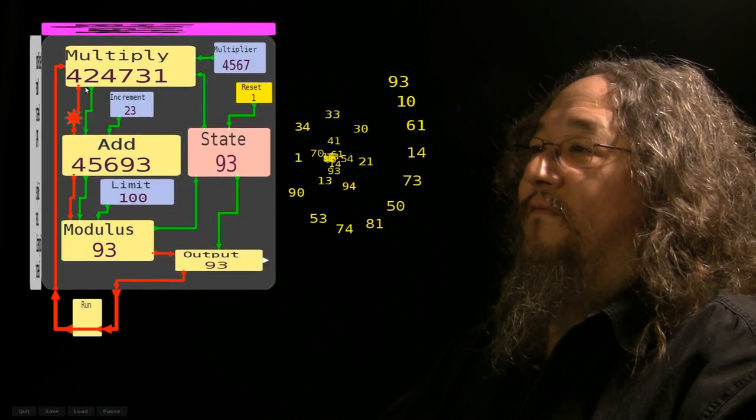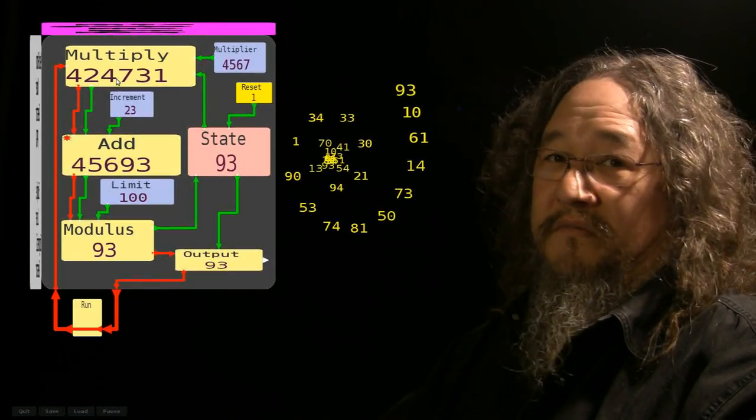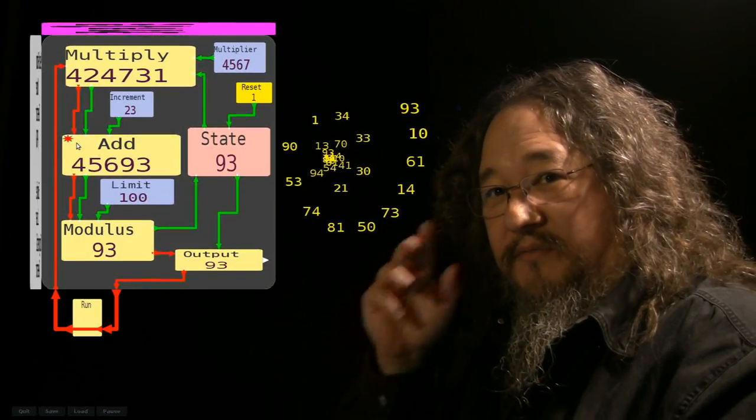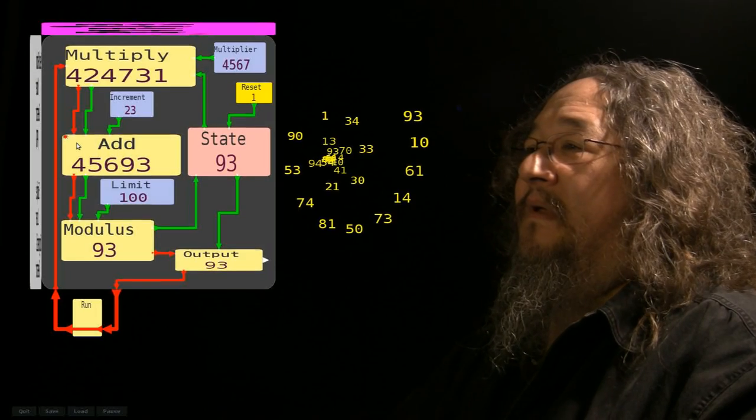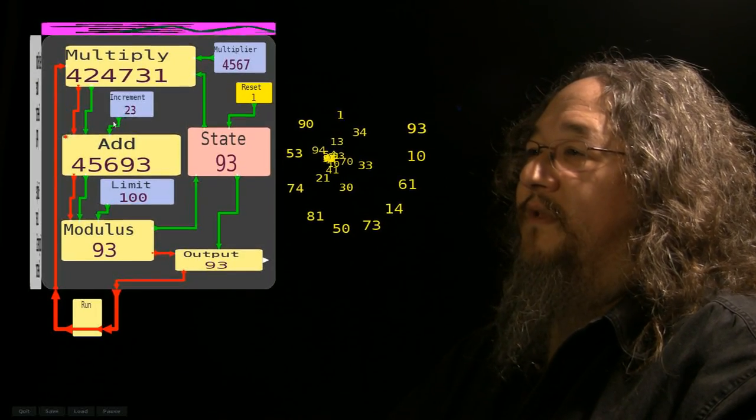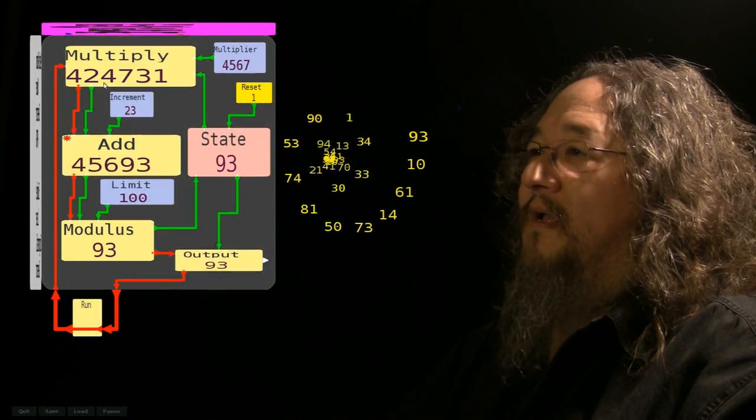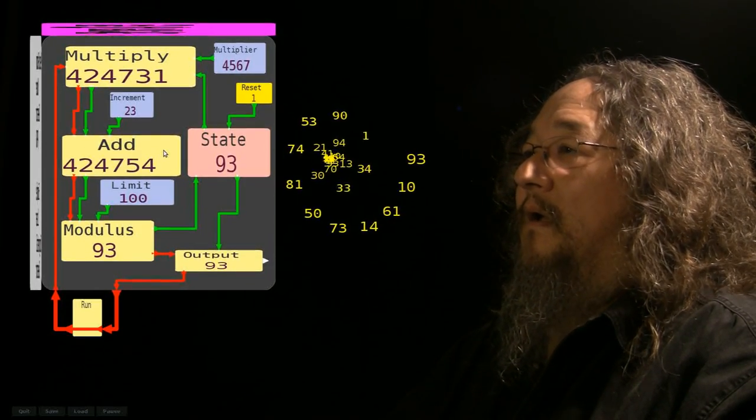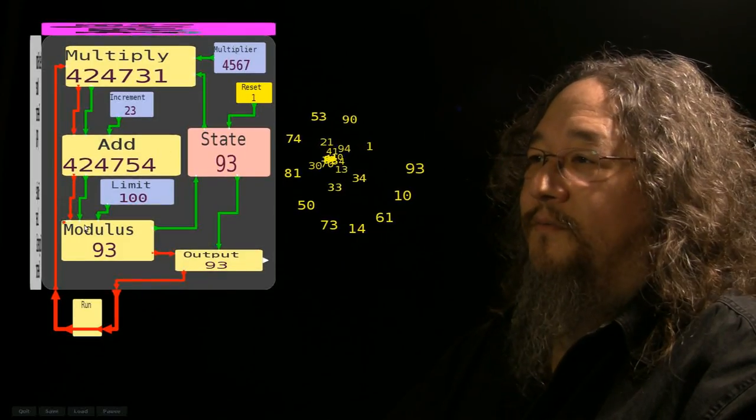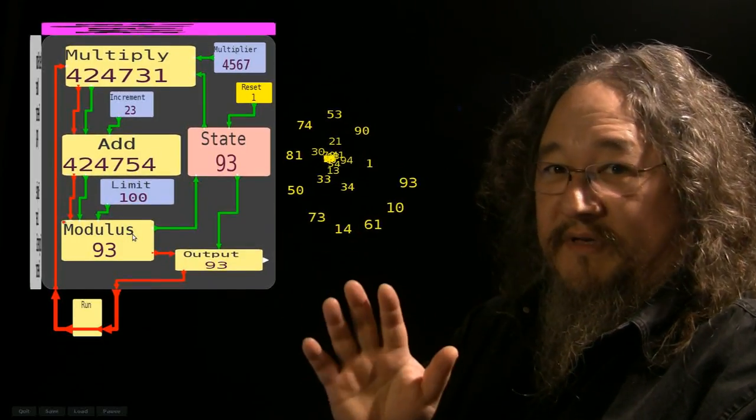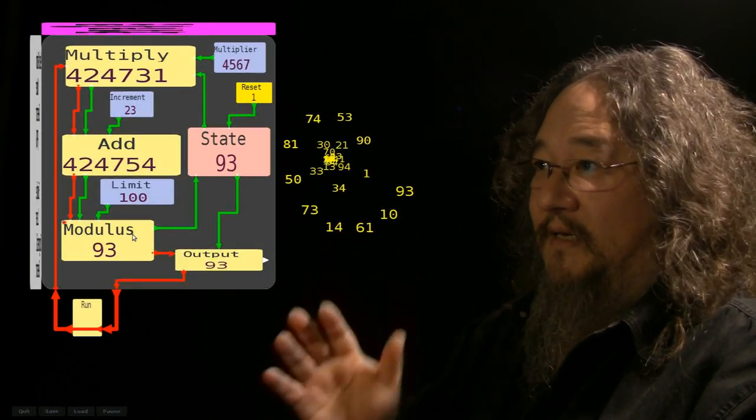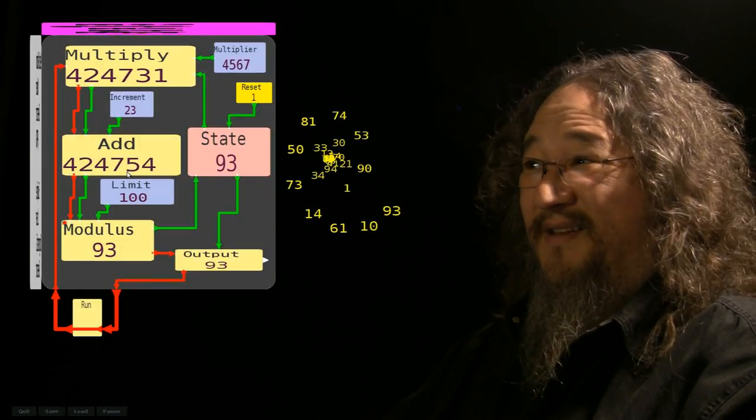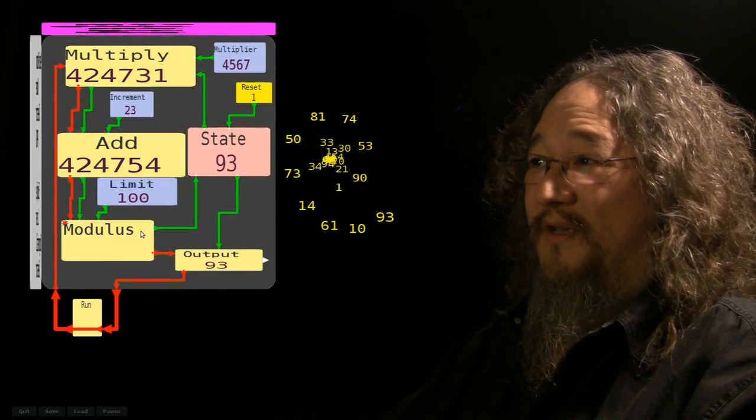And the result is going to be, I don't know what it's going to be. The result is four hundred and twenty-four thousand seven hundred and thirty-one. Whatever. And then we move on to the next step. This is serial determinism. Step by step by step. The next step is to add this number, twenty-three, to that number. And that's going to give me four twenty-four seven fifty-four. Right. There it is. Execution moves on.